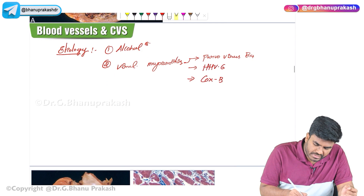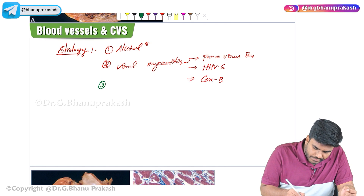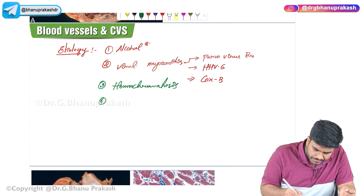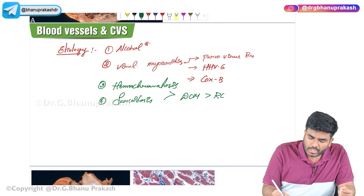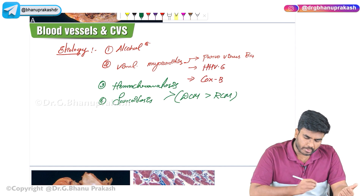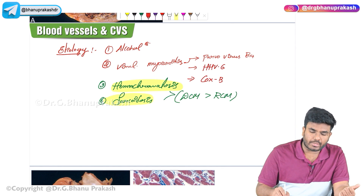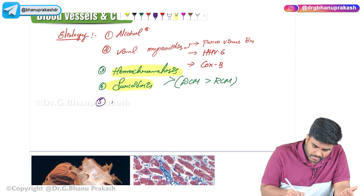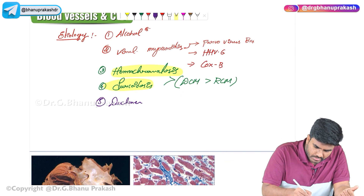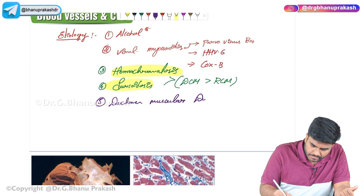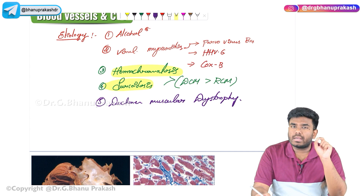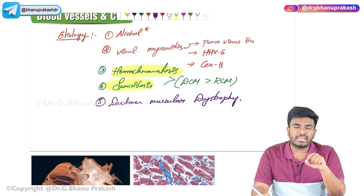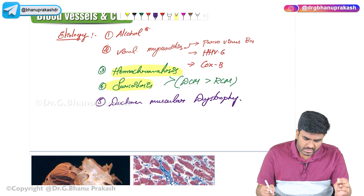Other reasons include hemochromatosis and granulomatous disorders like sarcoidosis. Remember, both these disorders can lead to dilated cardiomyopathy as well as restrictive cardiomyopathy, but dilated cardiomyopathy is much more common. Another cause is Duchenne muscular dystrophy, which is due to the absence of the peripheral protein dystrophin. Key features of Duchenne muscular dystrophy include pseudo-calf hypertrophy and the Gower sign. Duchenne muscular dystrophy can cause dilated cardiomyopathy.